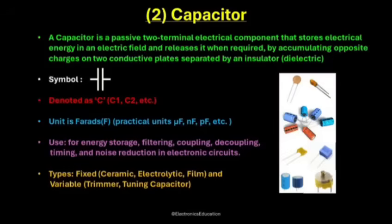The symbol of a capacitor shows two parallel lines representing the plates with a small gap between them. If one plate is curved, it means the capacitor is polarized, like an electrolytic capacitor. Capacitors are marked with the letter C — for example, C1, C2, etc. The unit of capacitance is the Farad, named after Michael Faraday. In real circuits, capacitors are very small, measured in microfarads, nanofarads, or picofarads.